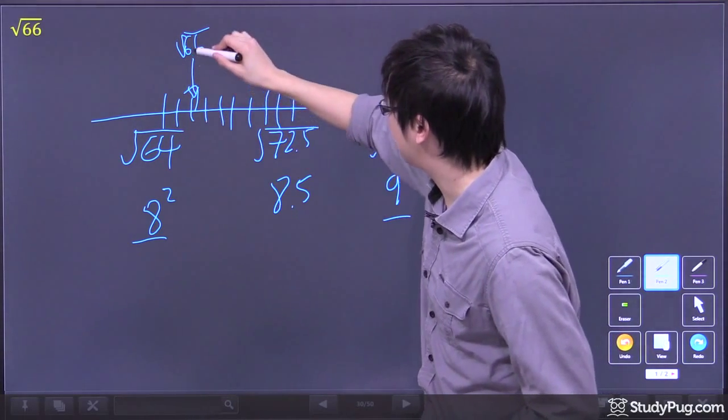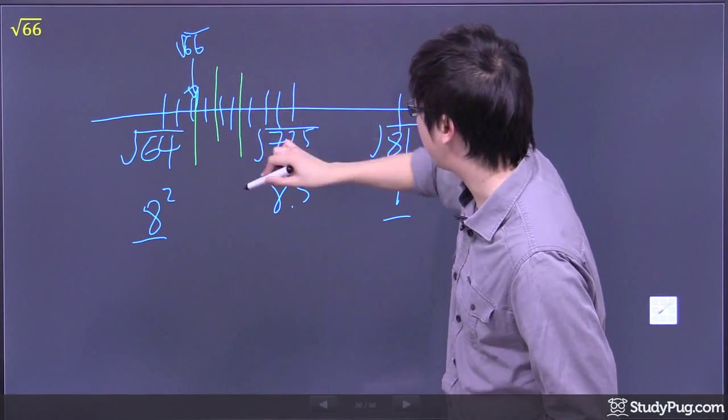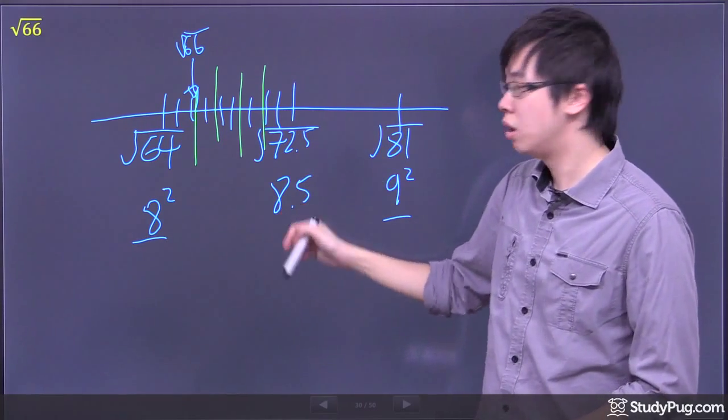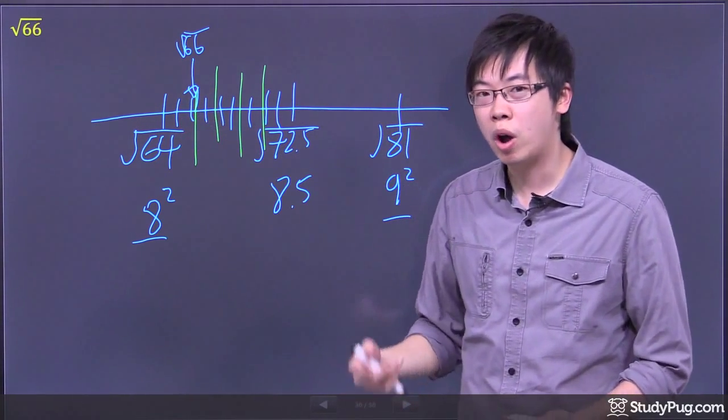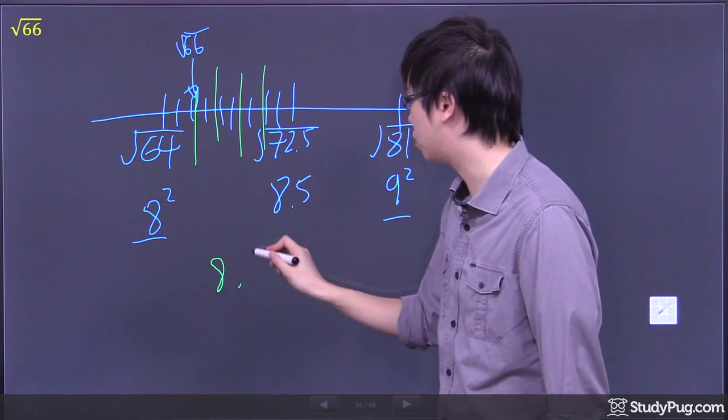This is 8, right? Then this is like 8.1, 8.2, 8.3, 8.4, 8.5. So it looks like I'm just a little bit on that 8.1 something. So I'm going to do an approximation 8.1.